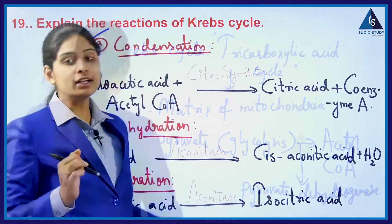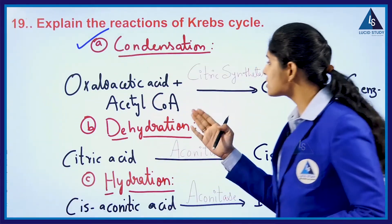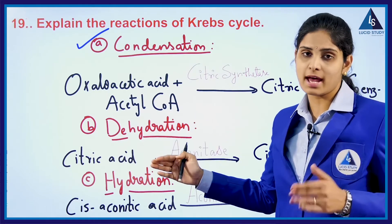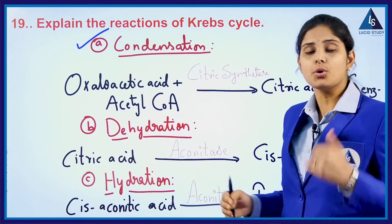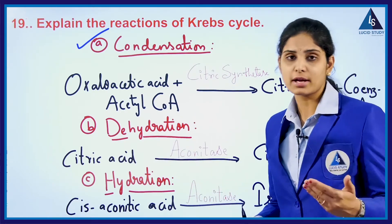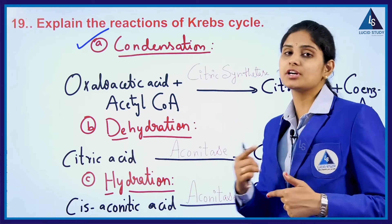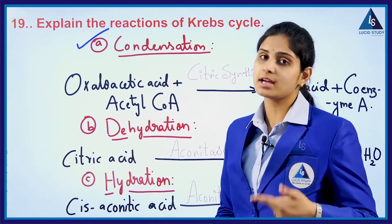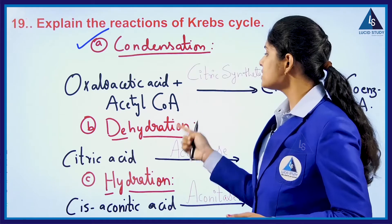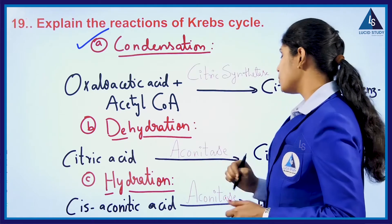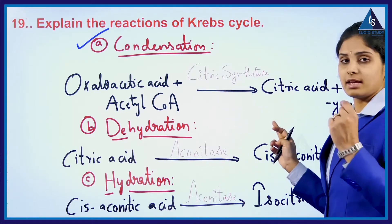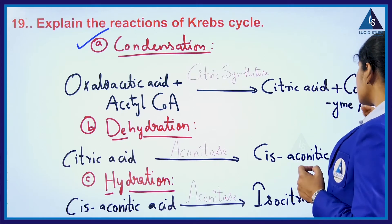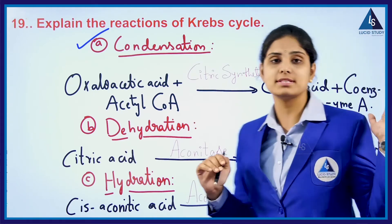Firstly, in condensation, the oxaloacetic acid reacts with acetyl-CoA — the pyruvate formed in glycolysis is converted into acetyl-CoA under the enzyme pyruvate dehydrogenase. It then combines with acetyl-CoA under citrate synthase enzyme, resulting in the formation of citric acid and coenzyme A.